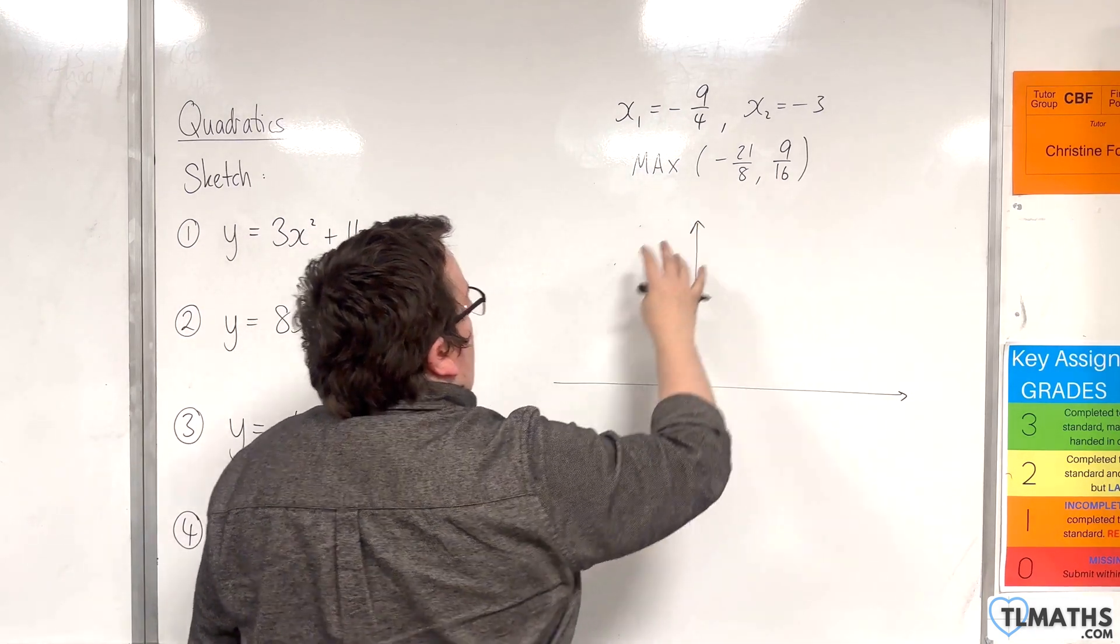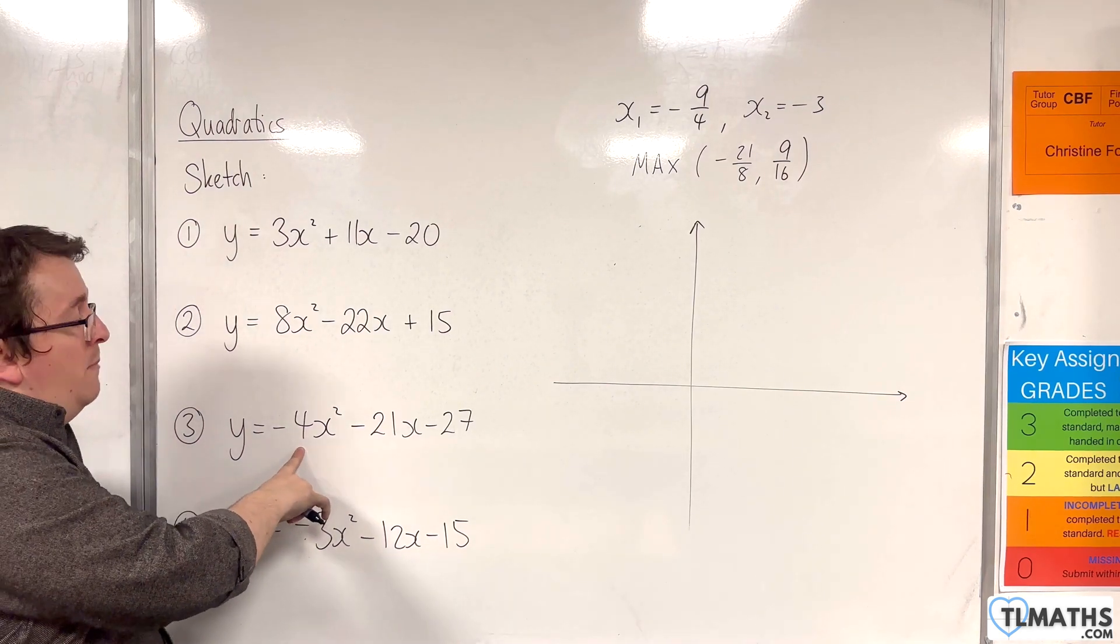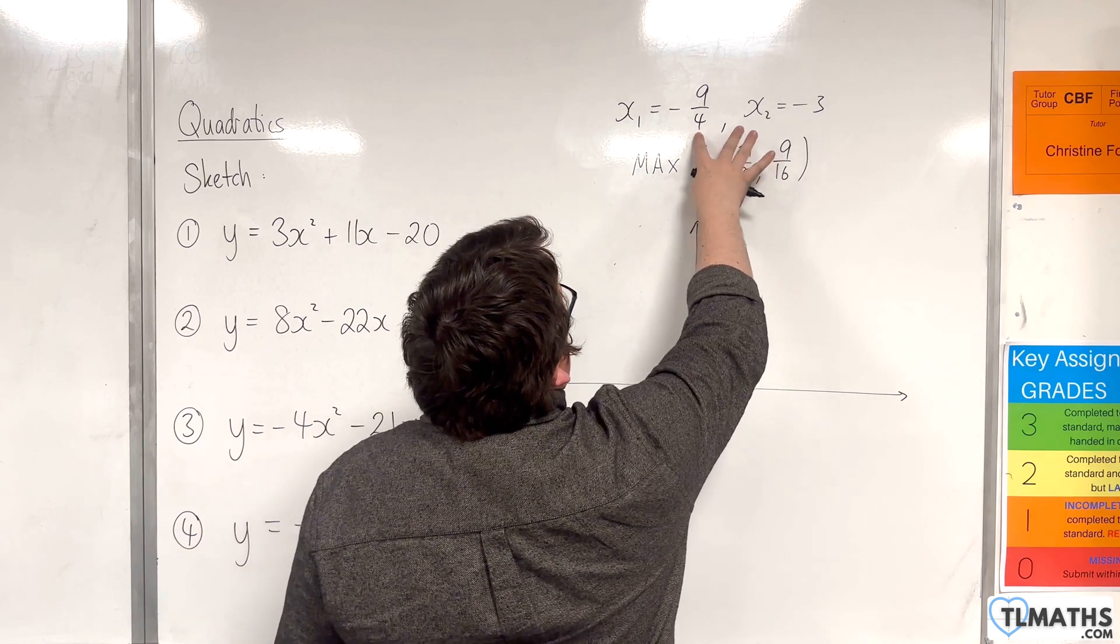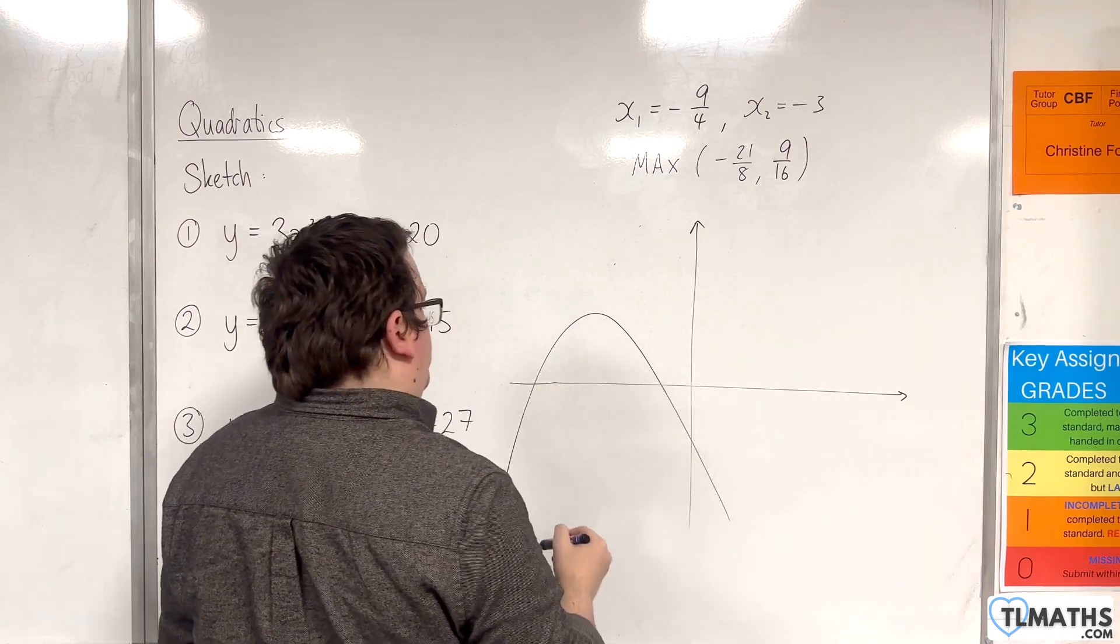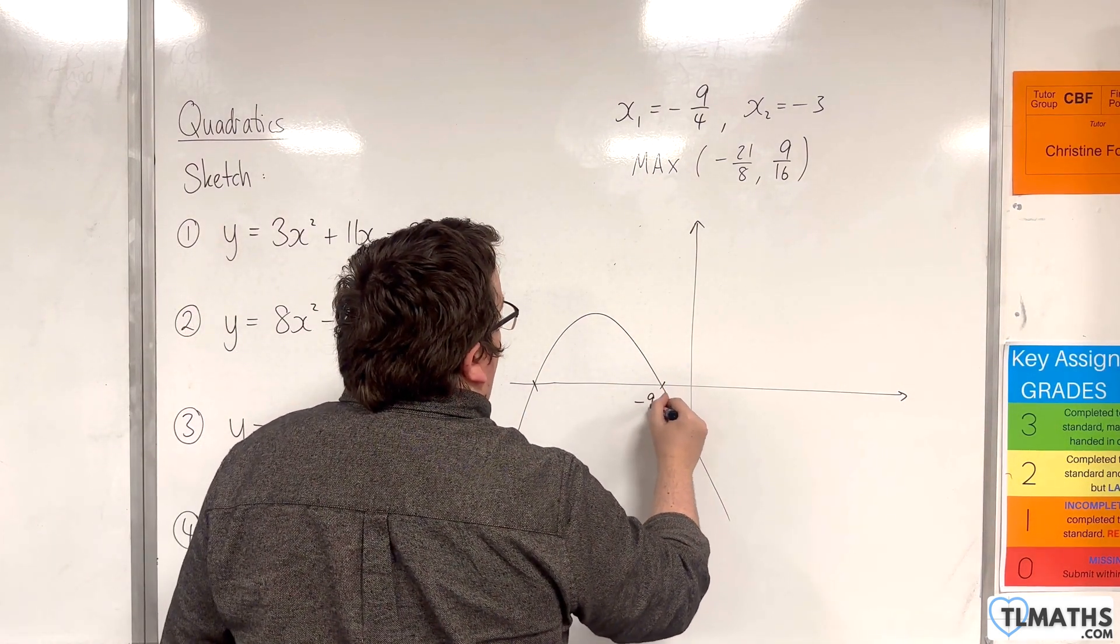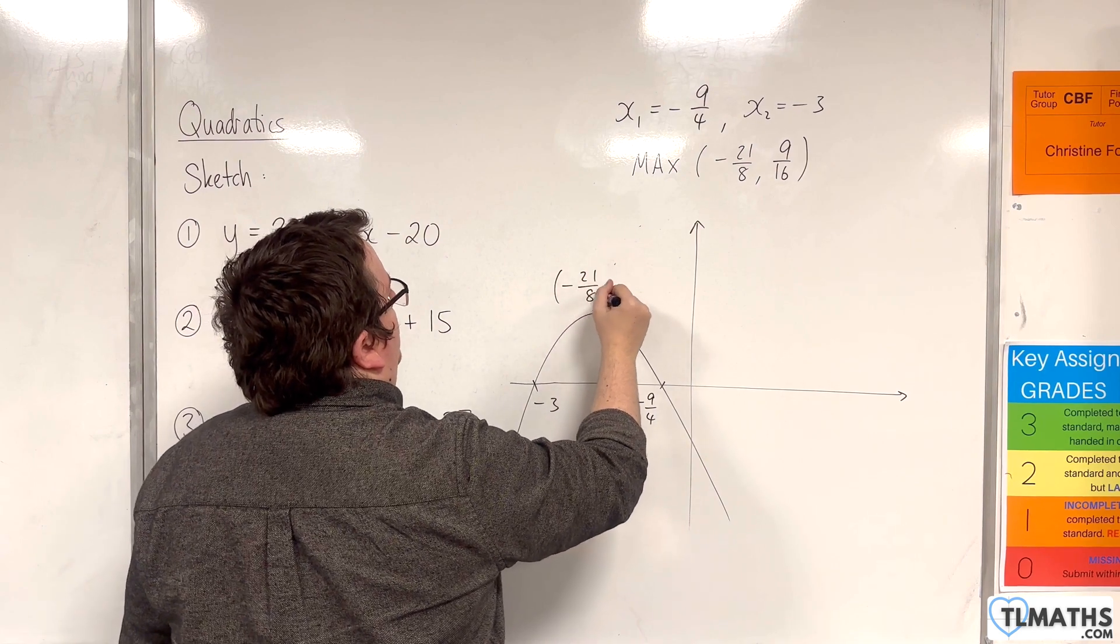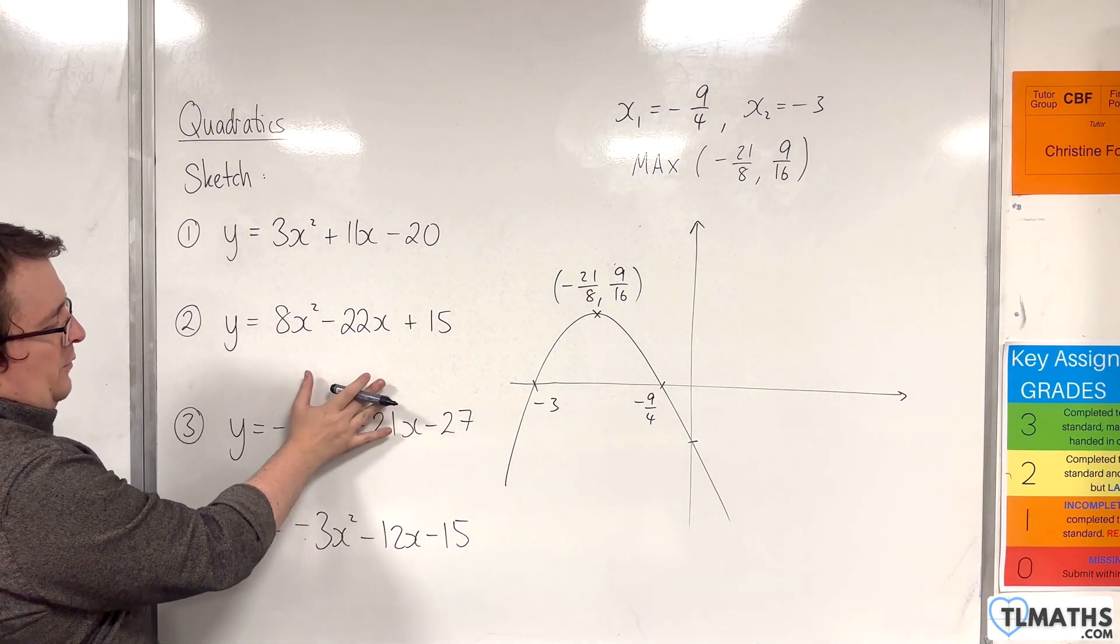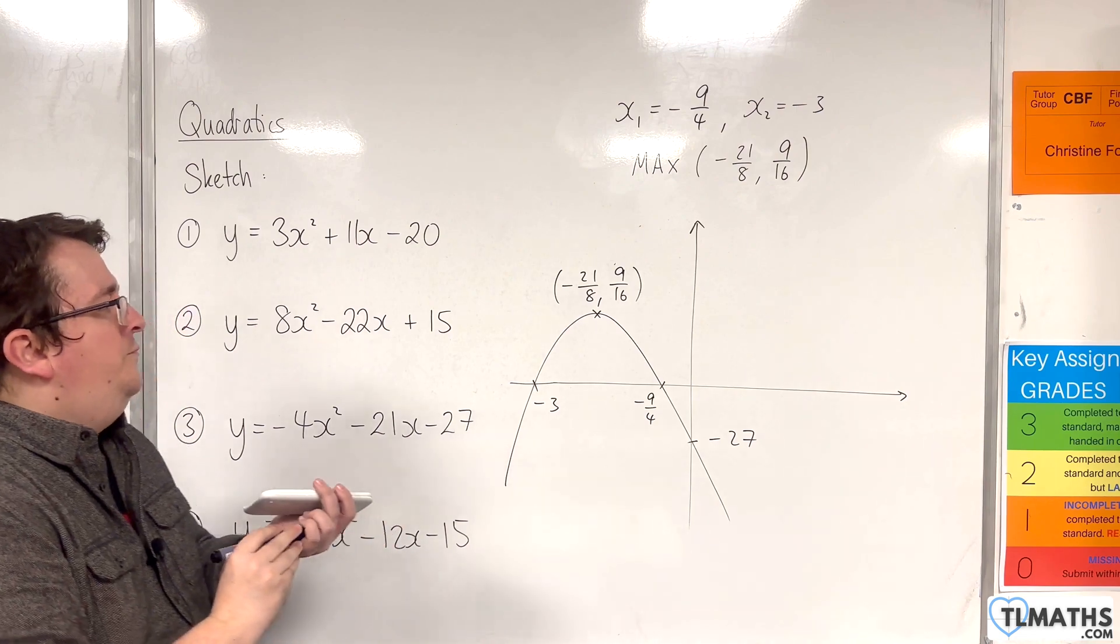So our maximum point is up here, top left-hand quadrant. It's a sad face parabola because of the -4 in front of the x², so we know it's going to be of that shape. And it's going through two negative points on the x-axis, so it's going to look something like this. Of the two, -9/4 is going to come first, that's -9/4 there, and that's -3. Then this point is -21/8, 9/16, our vertex. And this point is where it crosses the y-axis, which is when x is 0, so we're going to get y equals -27. There's our sketch for number 3.